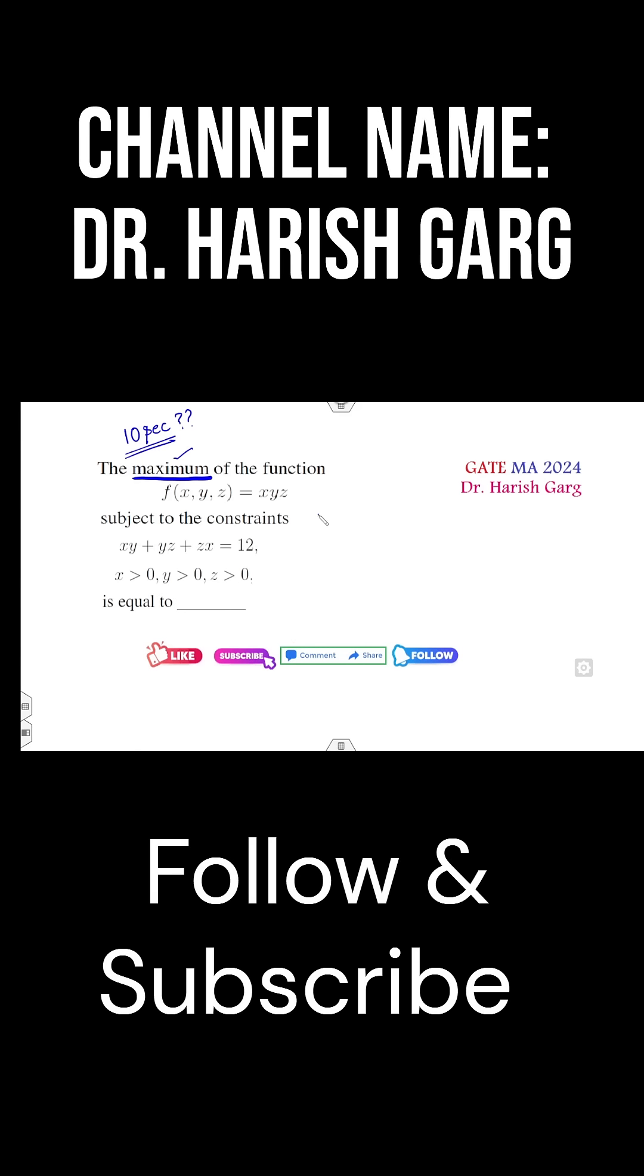Most students will solve the problem with the help of the Lagrange multiplier method but that will take a lot of time. So how can you solve the problem within a couple of seconds? You have to check when you change the value of x to y, y to z, and the functions and whatever the constraints are there, if they remain unchanged then the function is said to be symmetric.